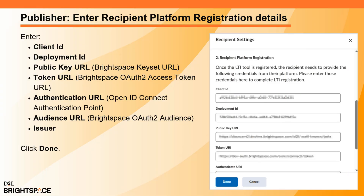Now let's briefly look at the Publisher Instance perspective again. The Publisher System Administrator must now add the recipient platform registration information provided by the recipient system administrator. From the Recipient Settings dialog, scroll down and enter the following: Client ID, Deployment ID, Public Key URL, Token URL, Authentication URL, Audience URL, and Issuer. Click Done.